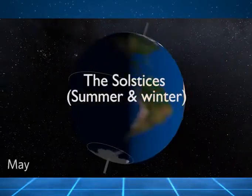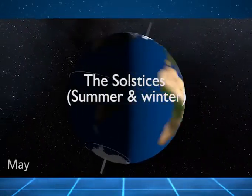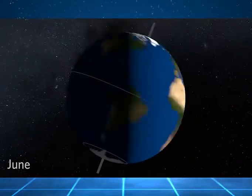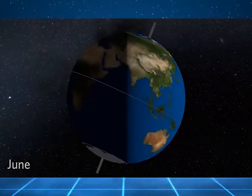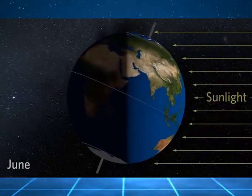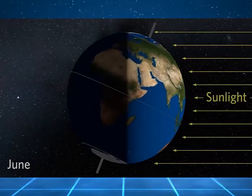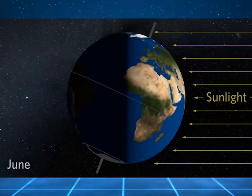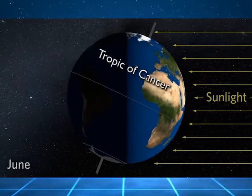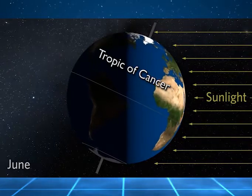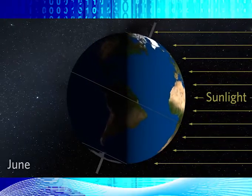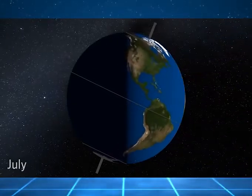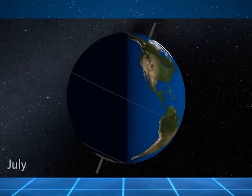The solstice — summer and winter. In the summer solstice, the Earth's tilt toward the Sun is at its maximum. On the day of the summer solstice, the Sun appears at its highest elevation, with a noontime position that changes very little for several days before and after. The summer solstice occurs when the Sun is directly over the Tropic of Cancer, located at 23.5 degrees latitude north, running through Mexico, the Bahamas, Egypt, Saudi Arabia, India, and Southern China.